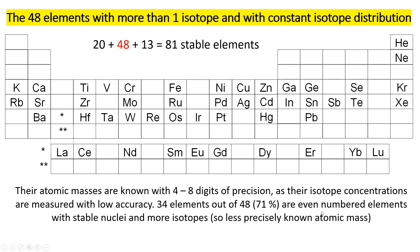By the way, 71% of the elements in this group are even-numbered elements, meaning an even number of protons in the nucleus, making the nuclei quite stable. That is why they have a larger number of different isotopes. The funny conclusion is that the more stable your nucleus is, the less accurately you know the atomic mass of that element, because the more isotopes it forms.